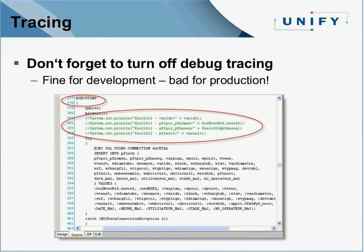When developing your application, it's common to write debug messages out to the server log instead of using display-message-box statements. In development, that's fine — but make sure to comment those out before deploying to production. We see many customers who leave those in, thinking they might be useful, and instead they fill up the server log and slow things down. Use a conditional variable before doing print lines to control debug output.